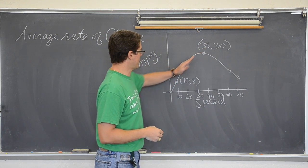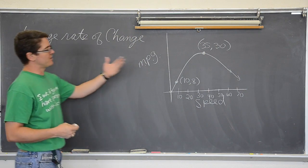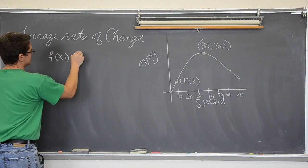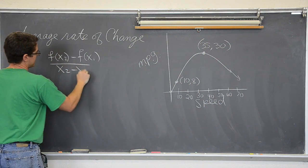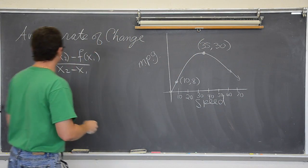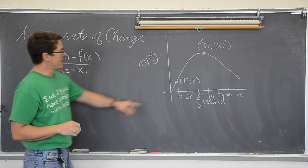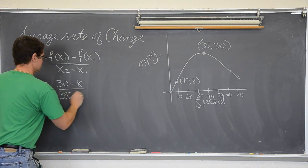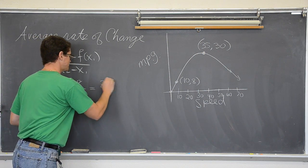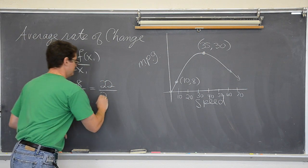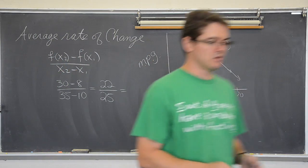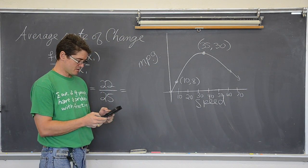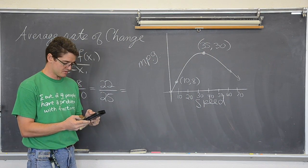Well, what is the average rate of change between those two points? Let's see. Again, I didn't make a function up. I just sketched this out. So we are going to do f of x sub 2 minus f of x sub 1 over x sub 2 minus x sub 1. No function work given. I just gave you the x and y values. So we are looking at 30 minus 8 over 35 minus 10. And we get a slope of 22 over 25, which comes out to .88.